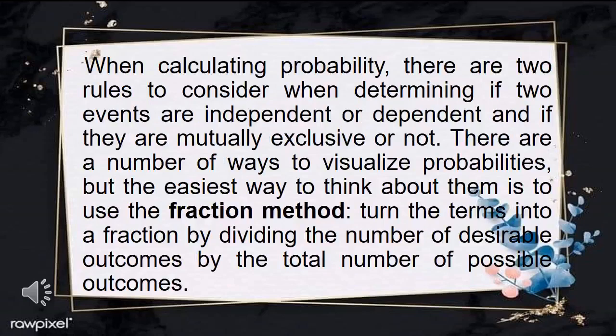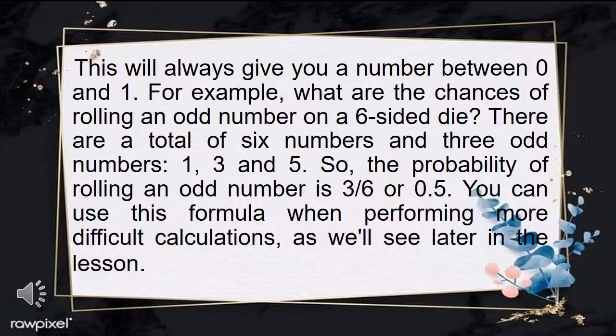When calculating probability, there are two rules to consider when determining if two events are independent or dependent, and if they are mutually exclusive or not. The easiest way to think about them is to use the fraction method — putting the terms into a fraction by dividing the number of desirable outcomes by the total number of possible outcomes. This will always give you a number between 0 and 1.